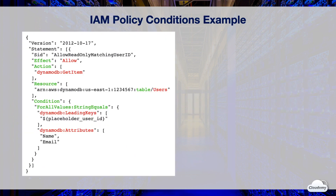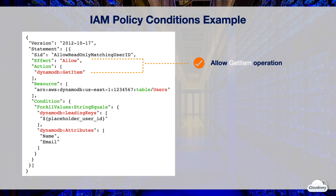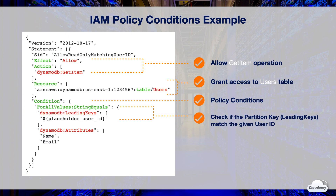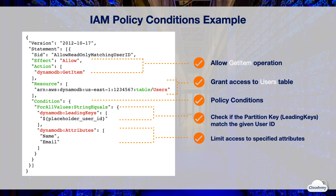Here is an example of a conditional IAM policy. It grants users read-only access to items in the users table where their user IDs match the partition key. The IAM policy uses effect and action to explicitly allow the get item operation — by default, IAM policy implicitly denies all possible actions until you explicitly allow a particular action, so get item is the only allowed action here. The resource element specifies the users table using the table ARN. The condition element restricts access by checking the partition key and limiting item attributes, using the condition keywords for all values and string equals to ensure all values in the request satisfy the condition. The DynamoDB leading keys condition checks if the partition key matches the user ID, and the DynamoDB attributes condition further limits access to specified attributes. In this case, the IAM policy grants users read-only access to the name and email attributes from the users table, only if their user IDs match the partition keys.